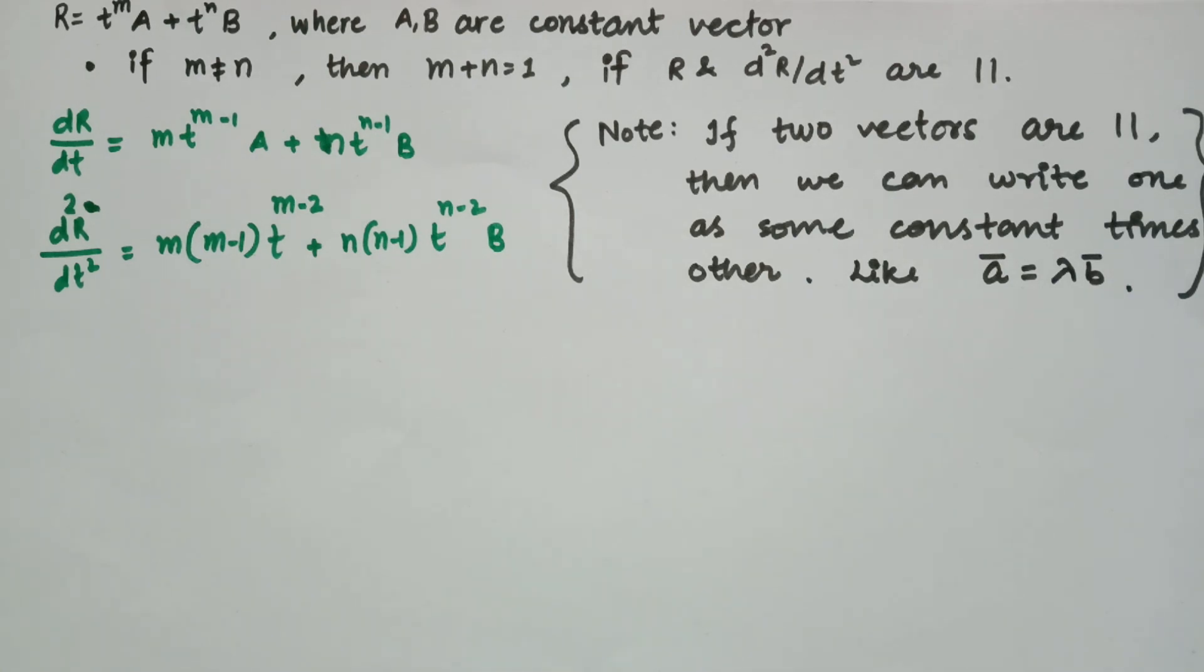We have to show that m plus n equals 1 if m is not equal to n, and the condition given to us is that r and the second derivative of r are parallel.